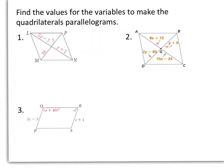Our first examples say to find the values for the variables to make the quadrilaterals parallelograms. In number one, if L, P, and M is a quadrilateral, then the diagonals bisect each other, which means they'd be congruent. So we can say that 2y minus 7 equals y plus 2.